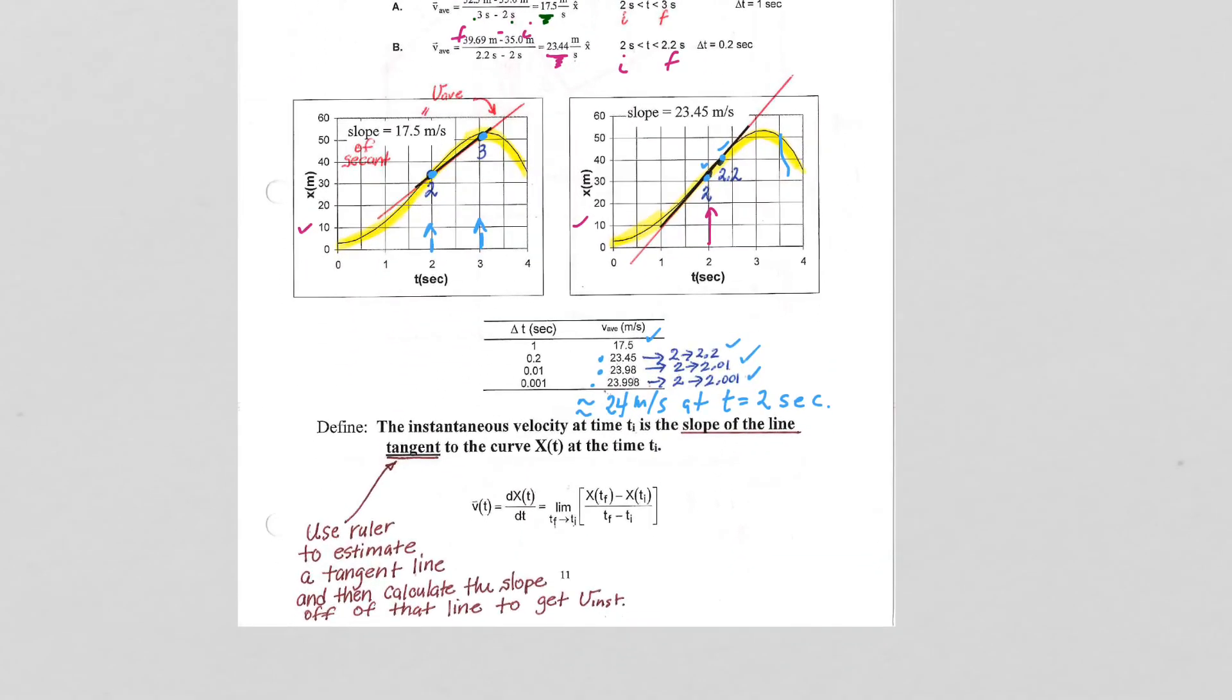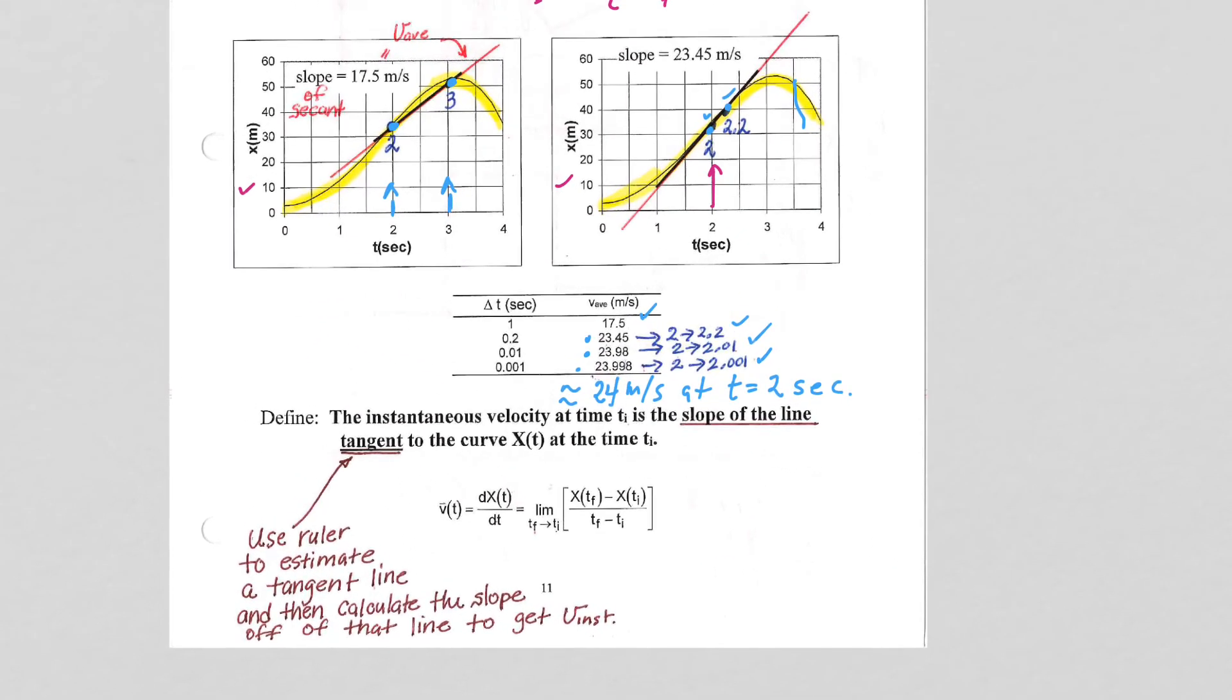When we do that, we see that our secant line, the line that intercepts the function at two points, now becomes a tangent line and intersects the function at one point.